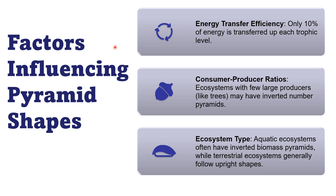What are the factors influencing the shapes of ecological pyramids? First is energy transfer efficiency — only 10% of energy transfers from one trophic level to another. Second is the consumer-producer ratio — ecosystems with few large producers, like trees, may have an inverted number pyramid; if producers are low, the pyramid is inverted, and if producers are more, it is upright. Third is ecosystem type — in the aquatic ecosystem the pyramid is inverted because productivity per unit area per unit time is very high, whereas in terrestrial ecosystems the pyramid is usually upright.